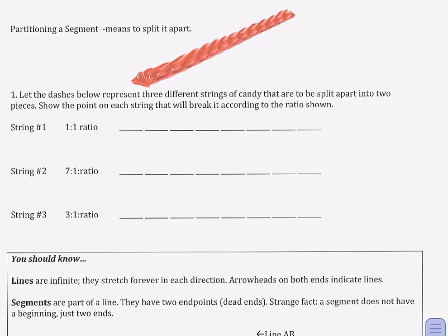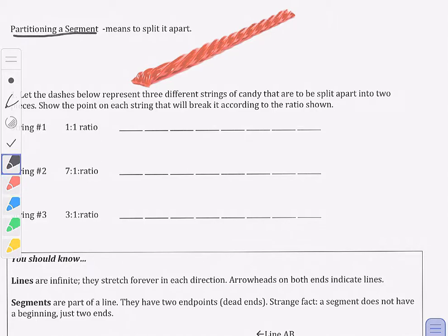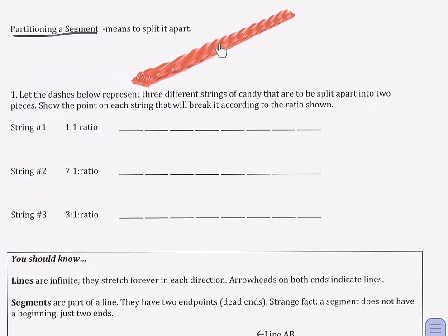Partitioning a segment means to break it apart into parts or split it apart. We've done that even in our last lesson — we've actually split a segment, or in this case a piece of candy, at the midpoint, making two equal pieces on either side. Today's lesson will be splitting it into uneven pieces.